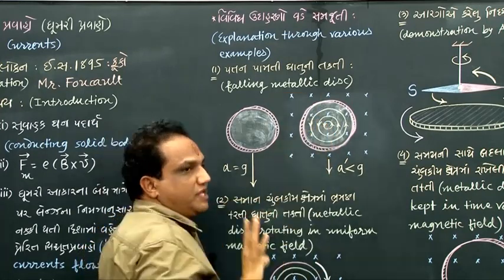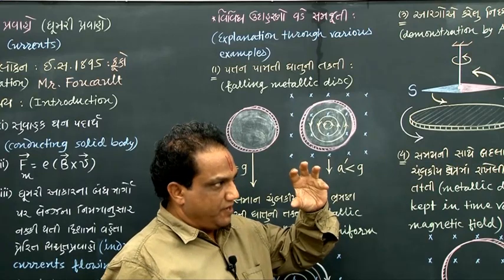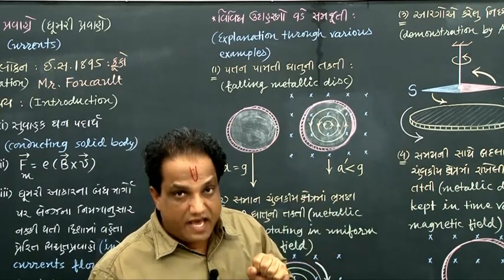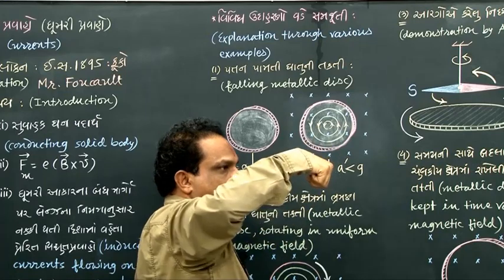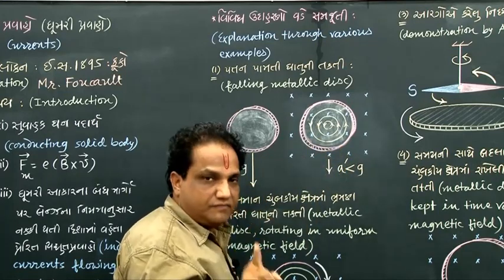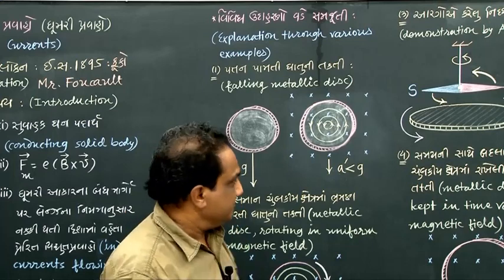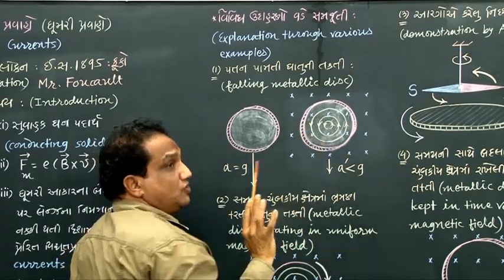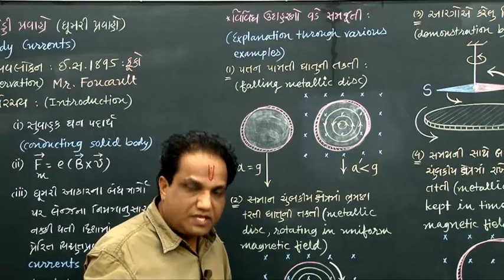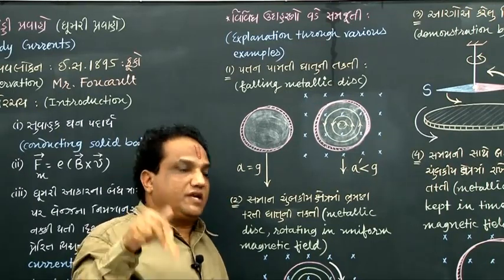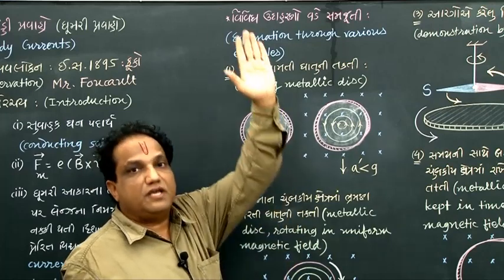These eddy currents are flowing anti-clockwise. Suppose you apply the external magnetic field perpendicularly outside — then these induced currents will flow clockwise such that they produce their own magnetic field perpendicularly inside, meaning the induced magnetic field and applied magnetic field are opposite to each other. Because of these induced currents, there is a Lenz force exerted on this falling disc. Lenz force is a resistive force exerted on the disc in a direction opposite to its motion — motion is downwards, so Lenz force is vertically upwards.